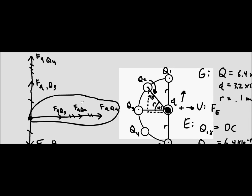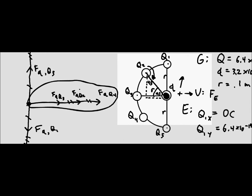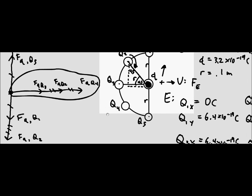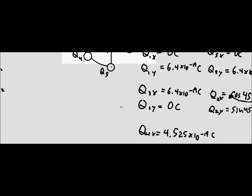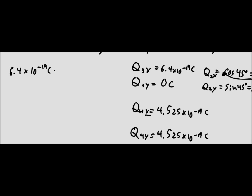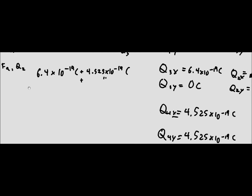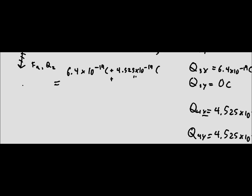And so from here, all we have to do is, after we take all of these forces, so all of the x forces, we've got 6.4 times 10 to the negative 19 coulombs, plus 4.525 times 10 to the negative 19 coulombs, and then plus that again. And we're going to set this equal to a big Q.